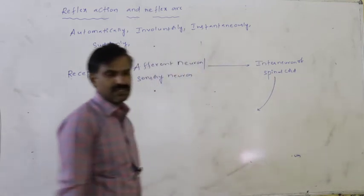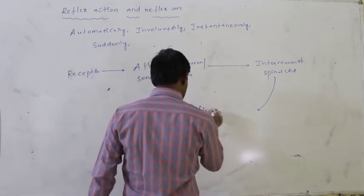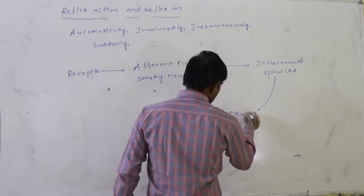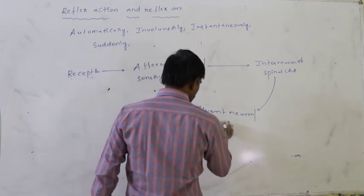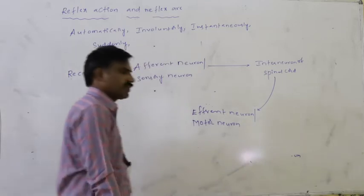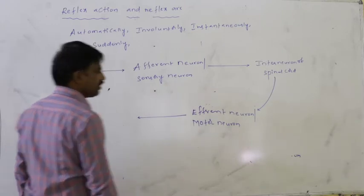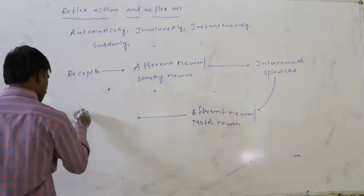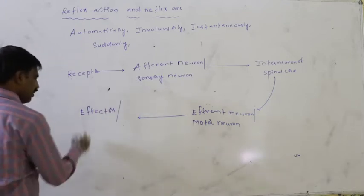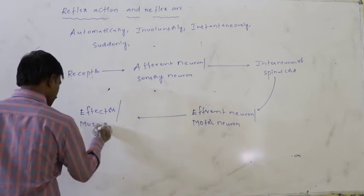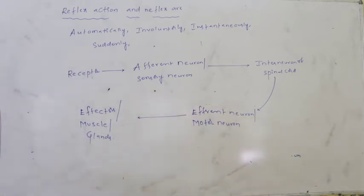From the interneuron of the spinal cord, motor information reaches the efferent neuron — also called the motor neuron. From the efferent or motor neuron, that information reaches the effectors — either the muscles or the glands. Effectors are nothing but either muscles or glands.